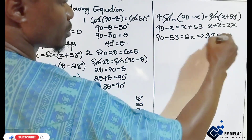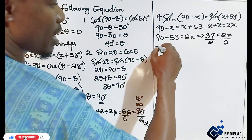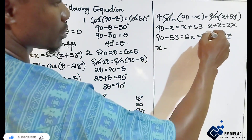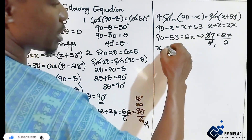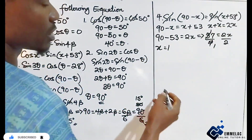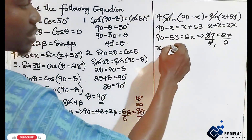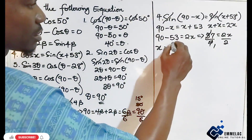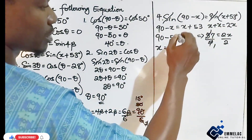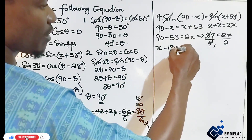Dividing both sides by 2, we get x equals 18.5 degrees.